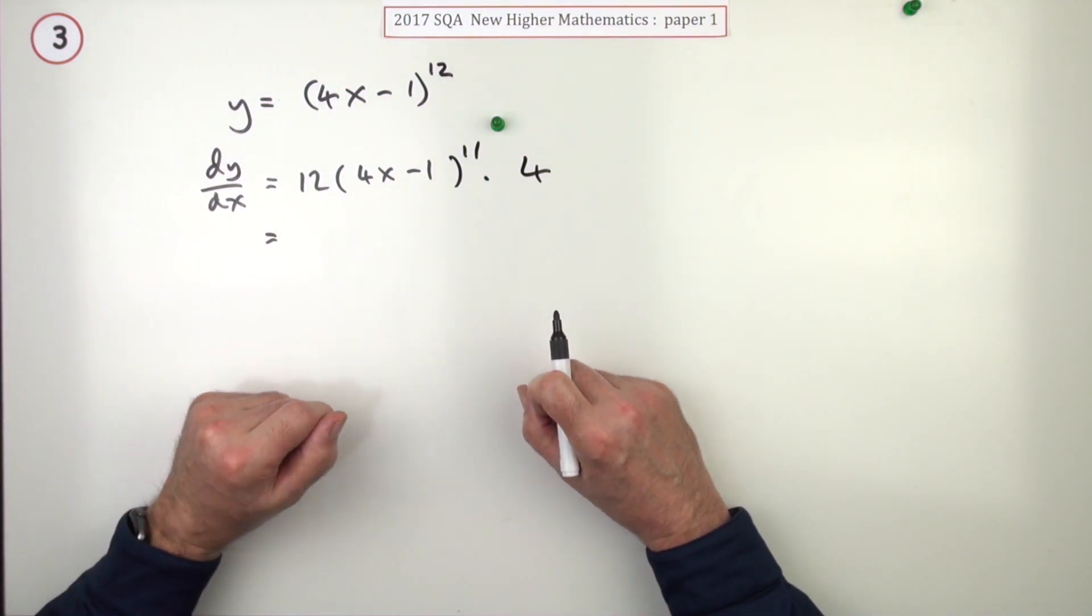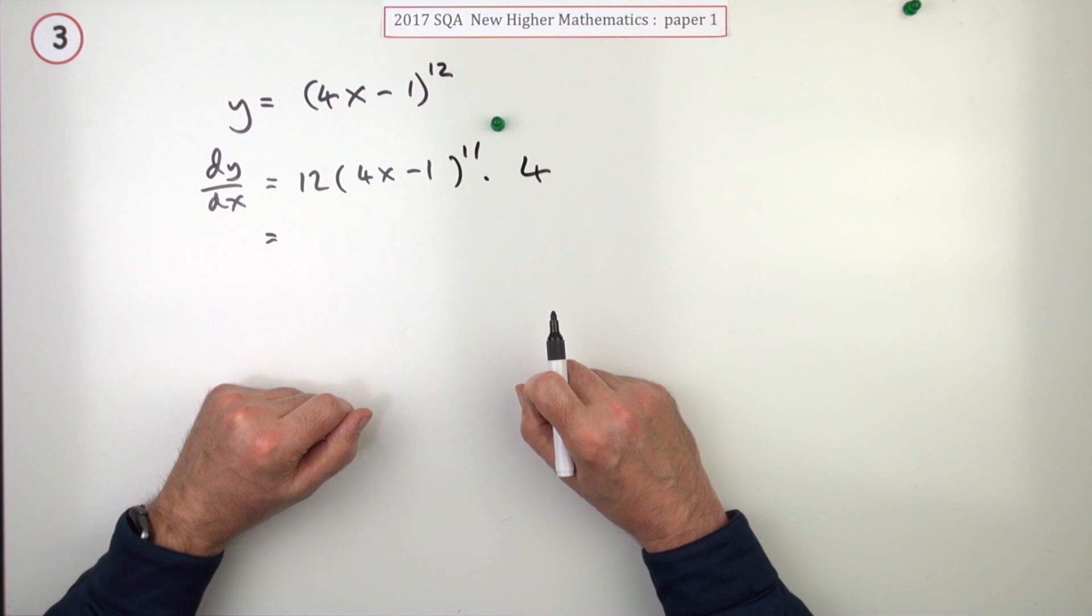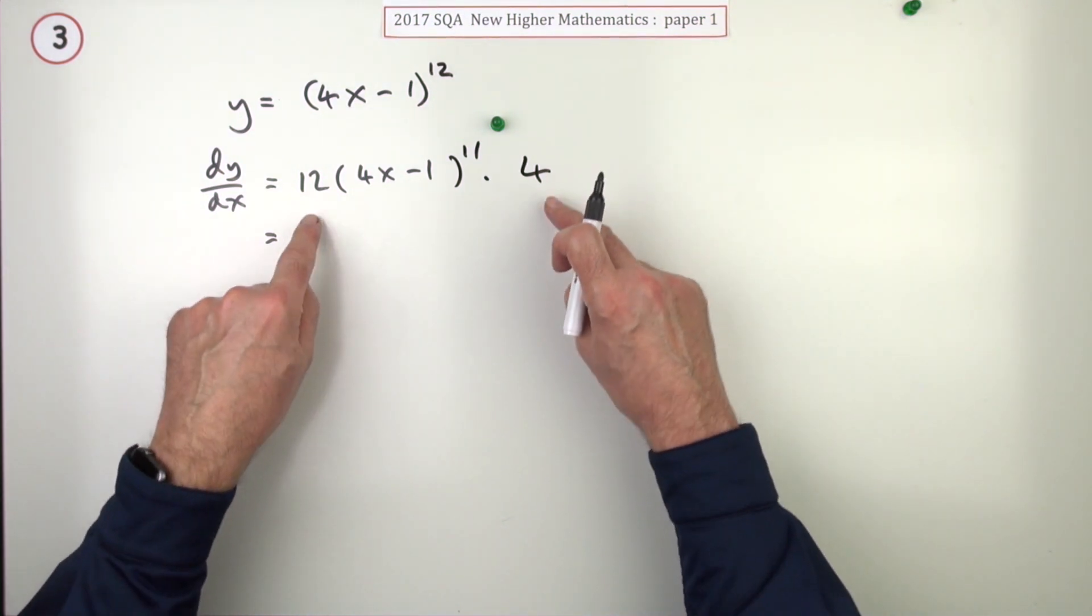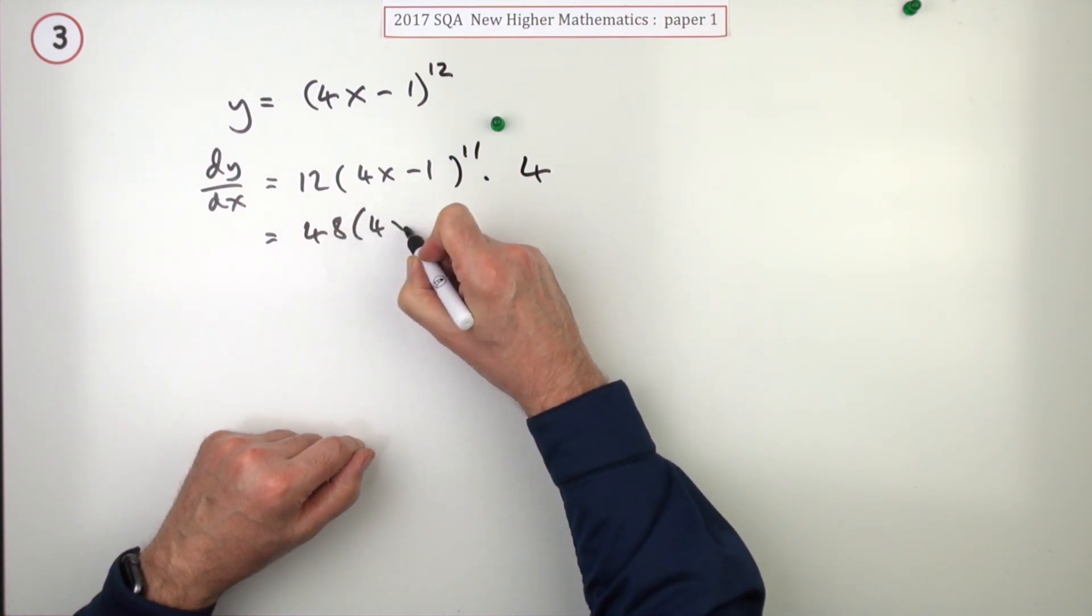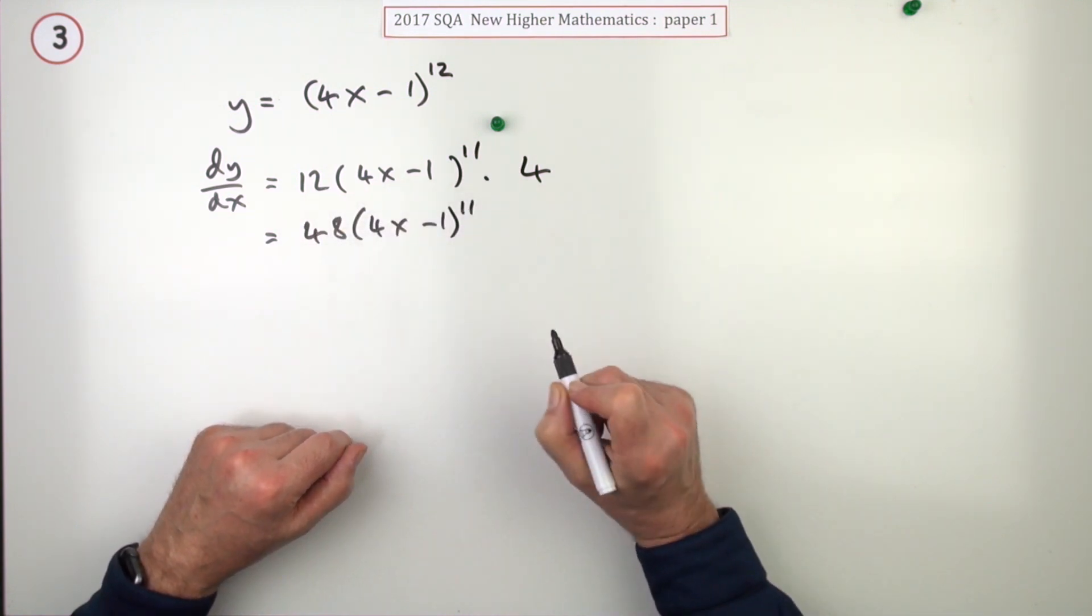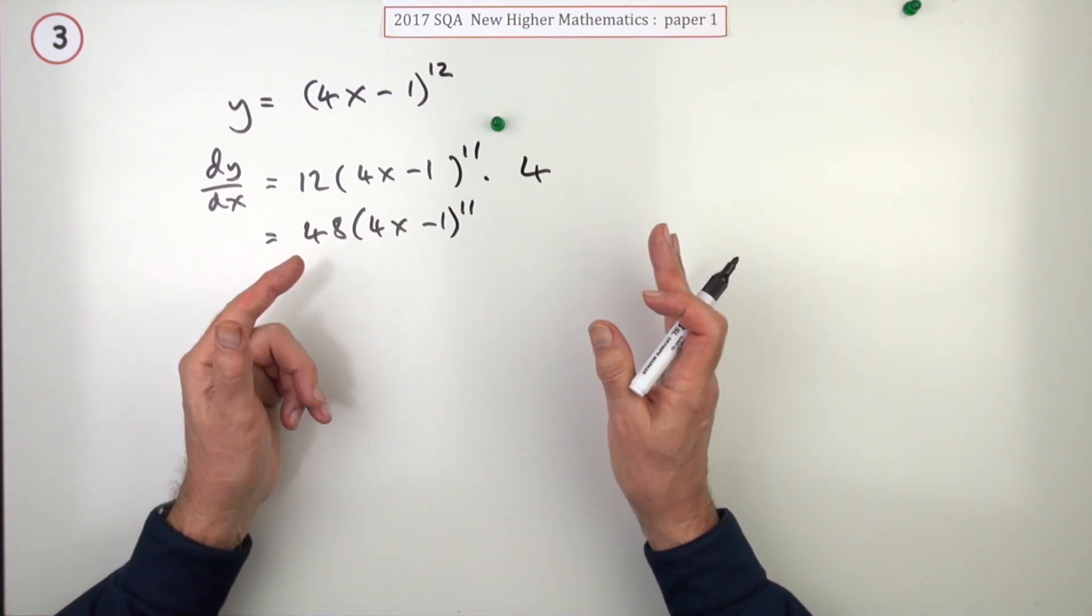You had to simplify the two numerical parts into a single constant term. You would expect to multiply those out to give 48. So 48 times (4x minus 1) to the power 11 is the answer. However...